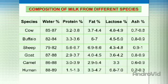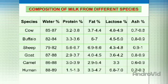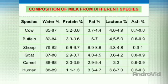Then the next species is buffalo. In buffalo's milk, the water percentage is 82 to 84%, protein 3.3 to 3.6%, fat 6 to 7%, lactose 4.5 to 5%, and ash 0.8 to 0.9%.